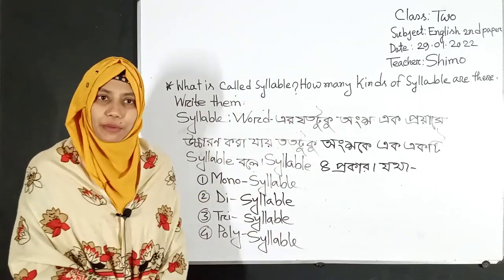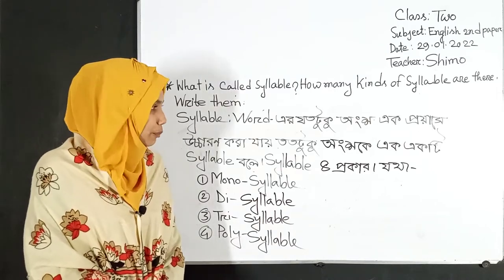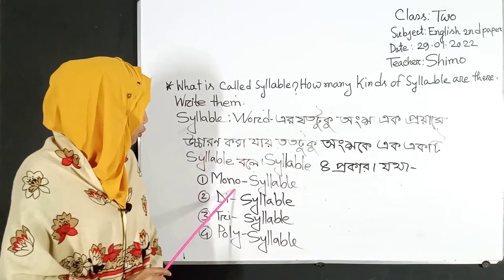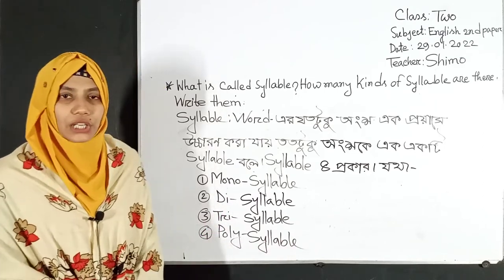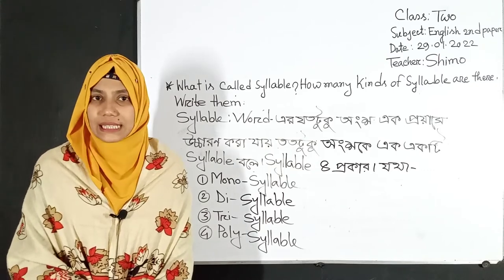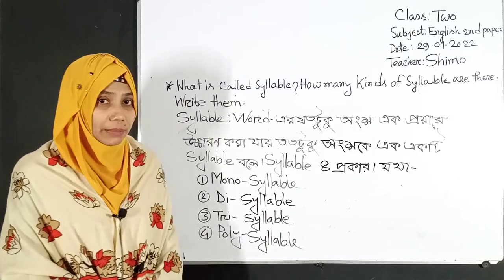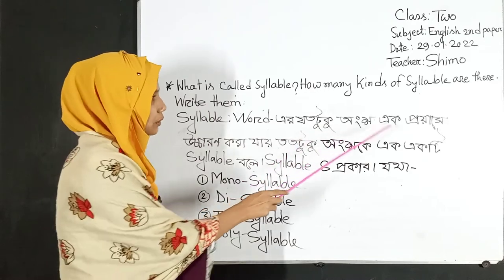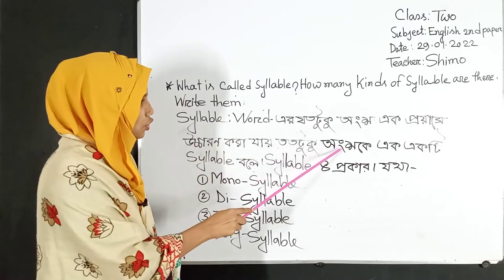How many kinds of syllable are there? Syllable is like: monosyllable, disyllable, trisyllable, or polysyllable. Syllable has 4 types: monosyllable, disyllable, trisyllable, and polysyllable.